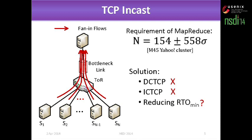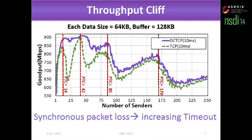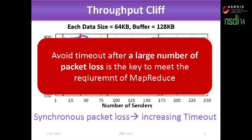I will tell you: no. We did the experiment and found there is a lot of throughput cleavage when the RTO minimum is set to 10 milliseconds. We have a deeper understanding of it — we found that centralized packet loss increases timeouts, leading to this phenomenon. After the point of throughput cleavage, the throughput decreased dramatically and then increased gradually. So we think that wide timeout after a large number of packet losses is key to meeting the requirements of MapReduce.